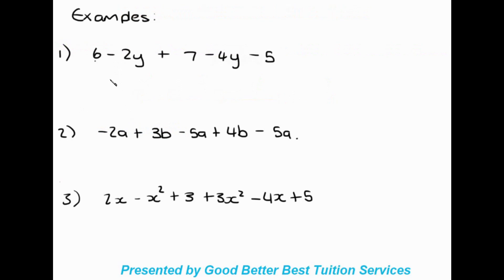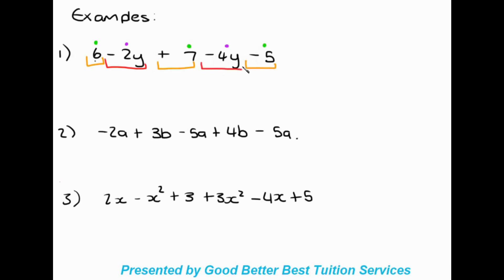Moving on. Here we have 6 minus 2y plus 7 minus 4y minus 5. Our first step was to use markers. We have no variable attached to 6, 7, or 5 — so those are like terms. Then we have y as our variable in two terms, which makes those like terms. We'll now isolate the terms: we have 6, positive 7, and negative 5, then minus 2y and minus 4y.